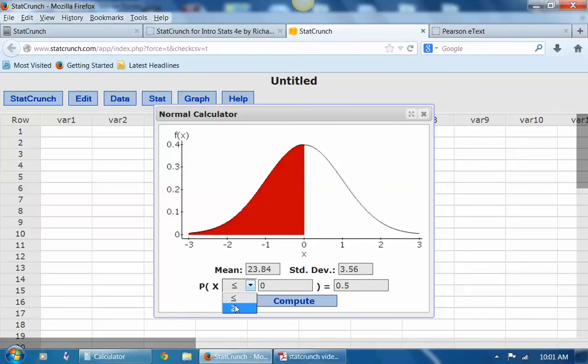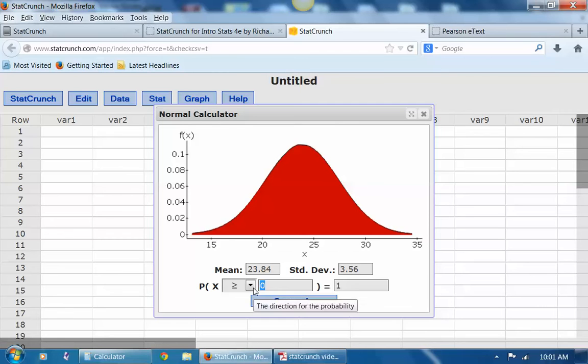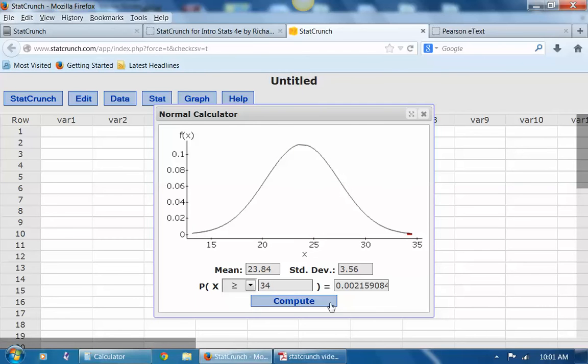And they want to know what would be more unusual, a car traveling 34? So let's find the area above 34 miles per hour. Let's see what the probability of a car going that speed under this distribution would be. It's about 0.002. So we might want to remember that. And then let's see what about the car going 10 miles per hour. Remember this 0.002.